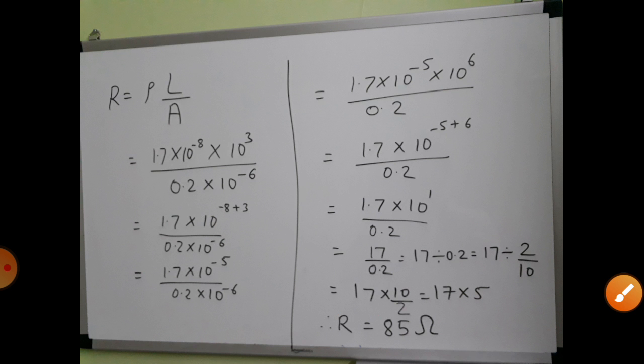At the end you can write the answer as a sentence: The resistance of a copper wire having a length of 1 kilometer and a diameter of 0.5 millimeter is equal to 85 ohms. This is the step-by-step problem-solving method. These steps can be minimized — some steps you can do in your mind — but do not skip all the steps.